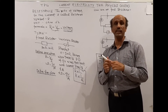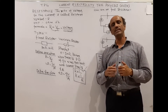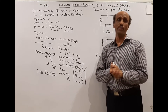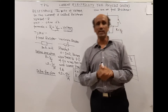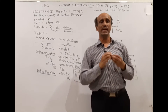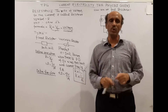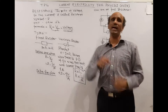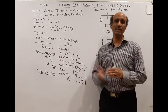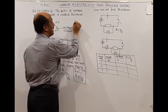Resistance depends on two factors. First, resistance is directly proportional to the length of the conductor — a shorter wire offers less resistance and a longer wire offers more resistance. Second, resistance depends on the area of cross-section, which is essentially the thickness of the wire. A thick wire has a larger area and therefore less resistance, while a thin wire has a smaller area and offers higher resistance. Area and resistance are inversely proportional.